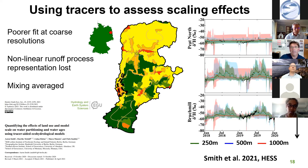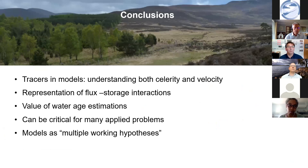To sum up: I hope I've shown that tracers and models can help us understand both celerity and velocity, can better represent flux-storage interactions, give us an insight into the value of water age estimates, and can be critical to many applied problems. I'm not advocating that everyone should be using tracer-aided models, but if we think of models as multiple working hypotheses of catchments, then they're a valuable tool in our toolbox for understanding hydrological function better. Thank you.